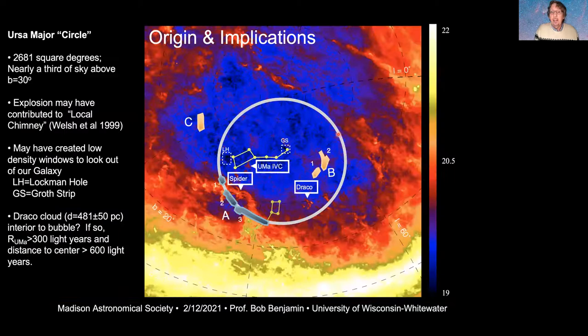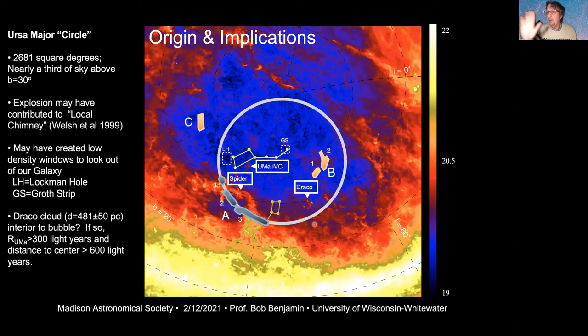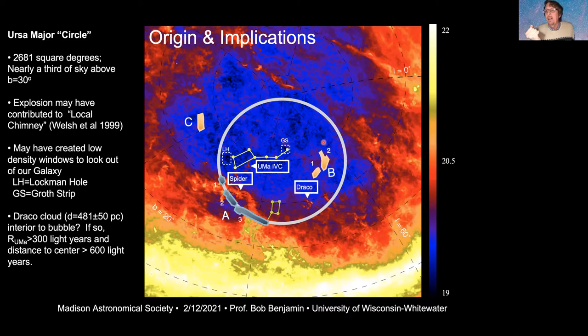A couple of implications: first, this direction of the sky is characterized by the least amount of gas of any direction — it's where astronomers study external galaxies through windows like the Lockman Hole and the Groth Strip. The idea is that an explosion here cleared out a big area of sky, basically opening up a window for us to look out of the Milky Way. That's one potential implication of this discovery.